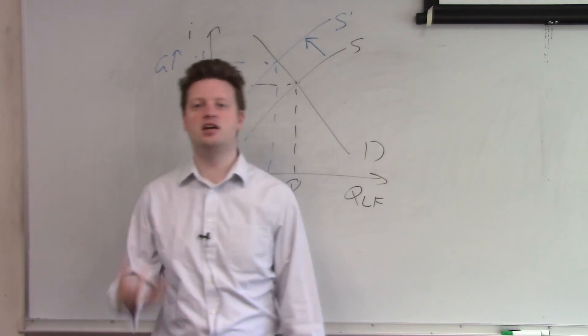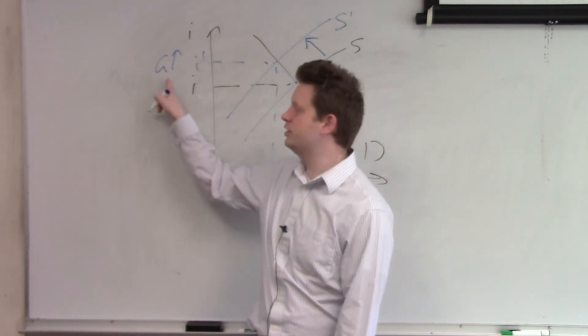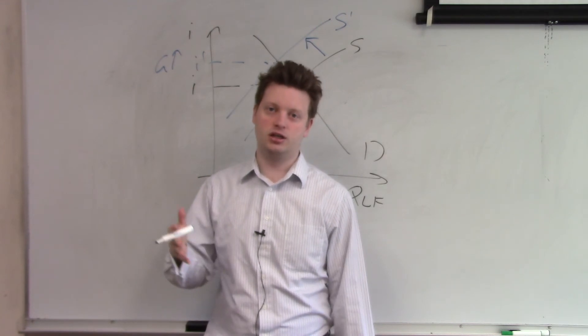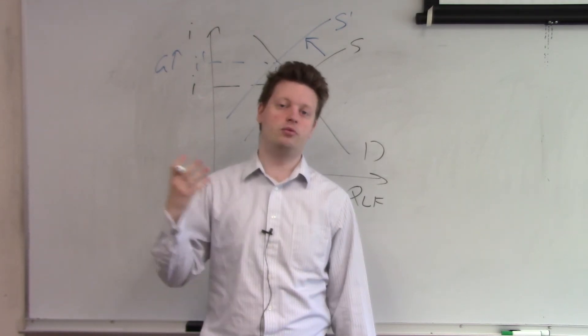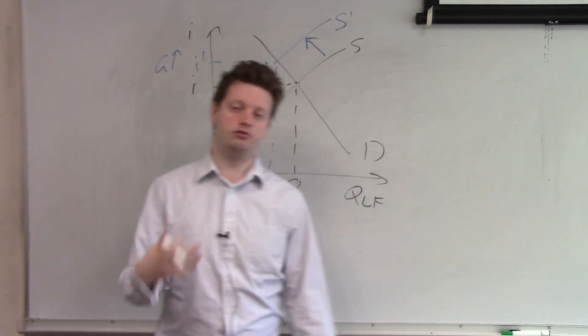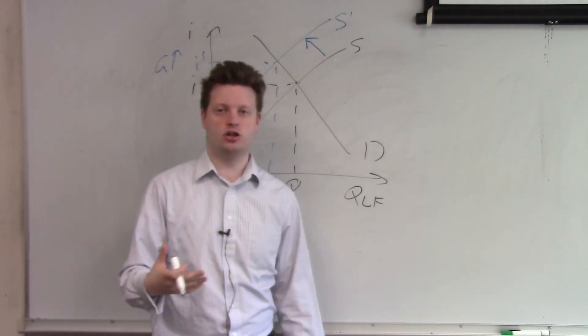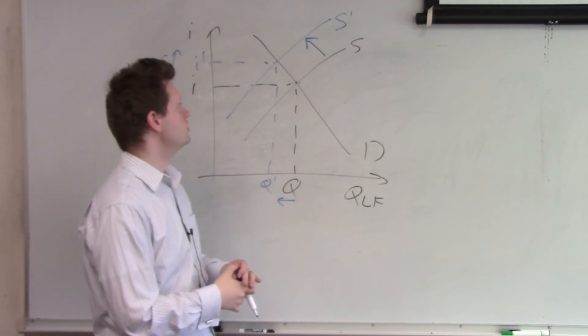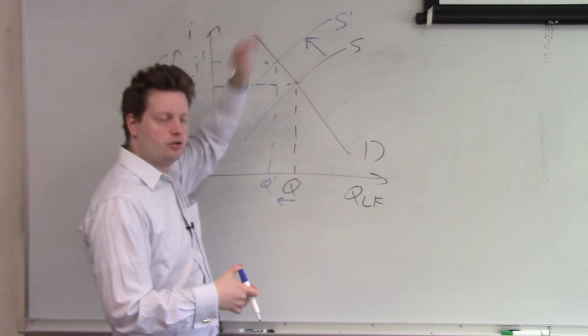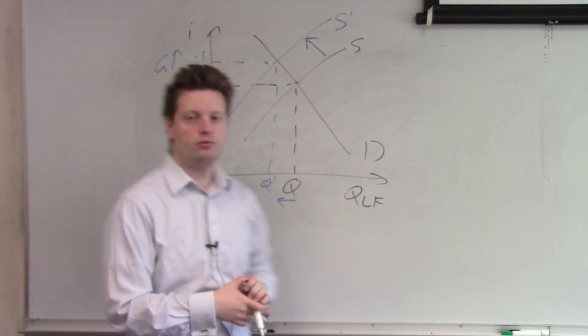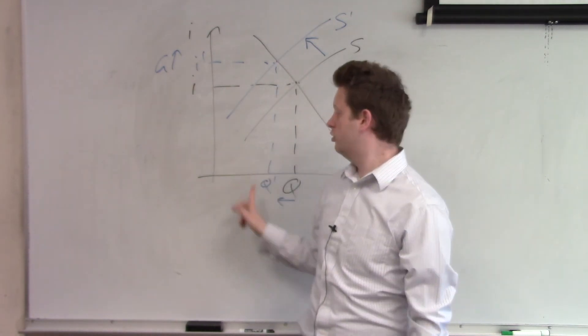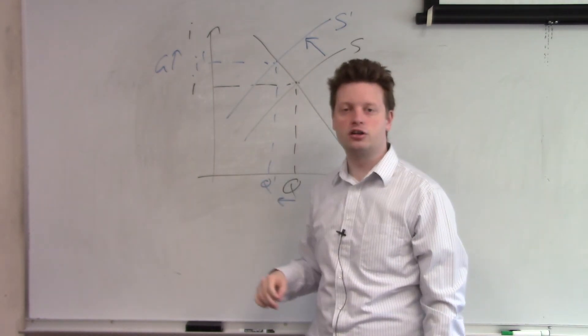So this means if governments increase their spending, households will give the money immediately to the government and will not lend as much to firms. So will not save as much and make funds available for firms, which will cause the supply of loanable funds to go to the left, which means that the quantity of loanable funds in equilibrium goes down and the market interest rate goes up.